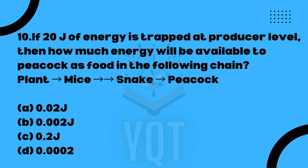If 20 joules of energy is trapped at the producer level, how much energy will be available to a peacock as food in this food chain: plant → mice → snake → peacock? Applying the 10% energy transfer rule: 20 joules at producer → 2 joules at mice → 0.2 joules at snake → 0.02 joules at peacock. The correct answer is Option A: 0.02 joule.